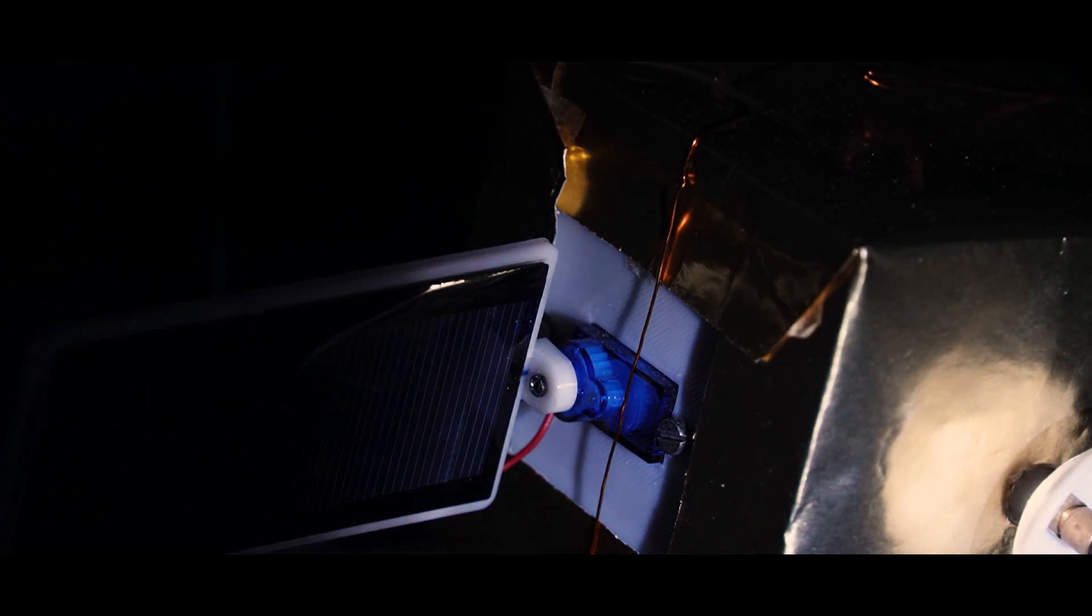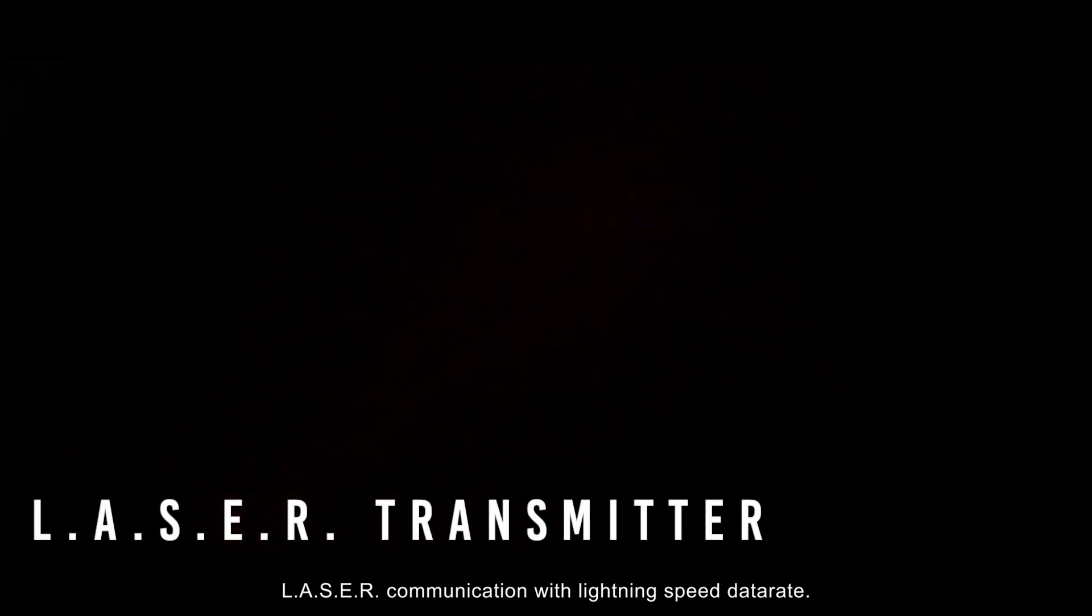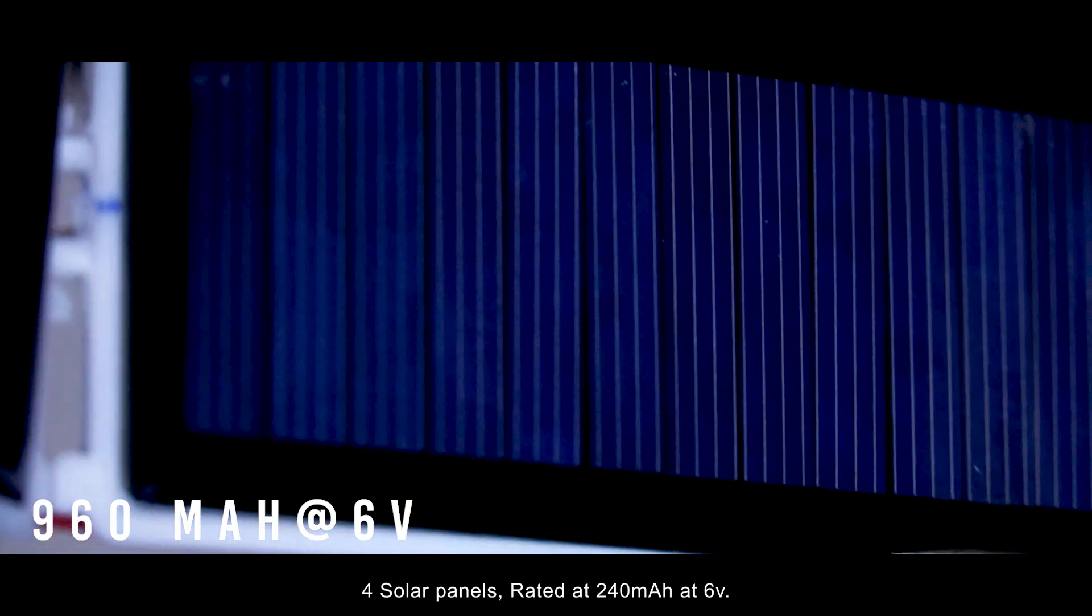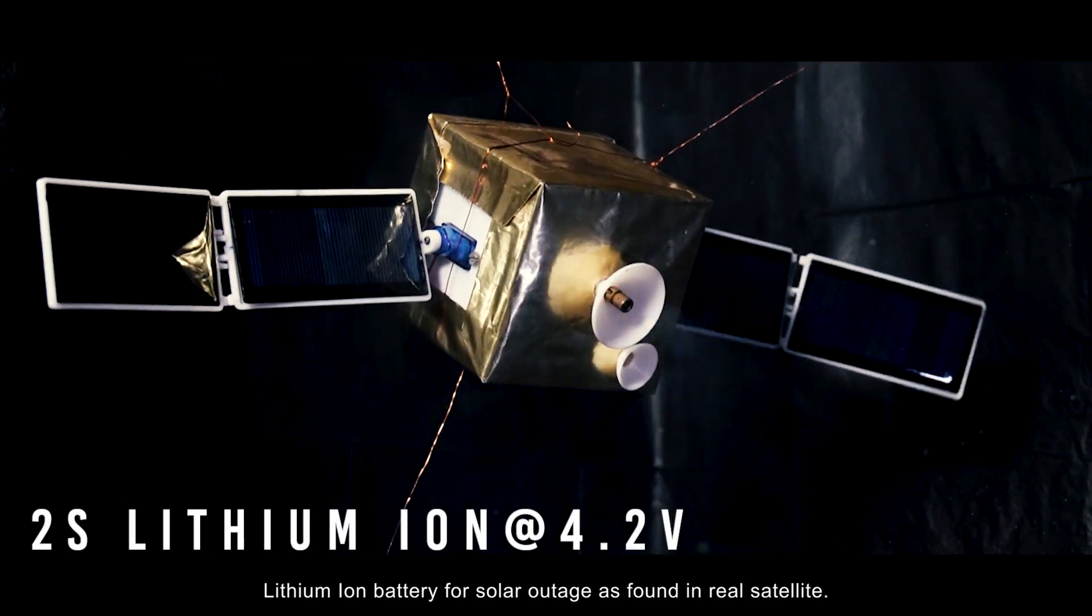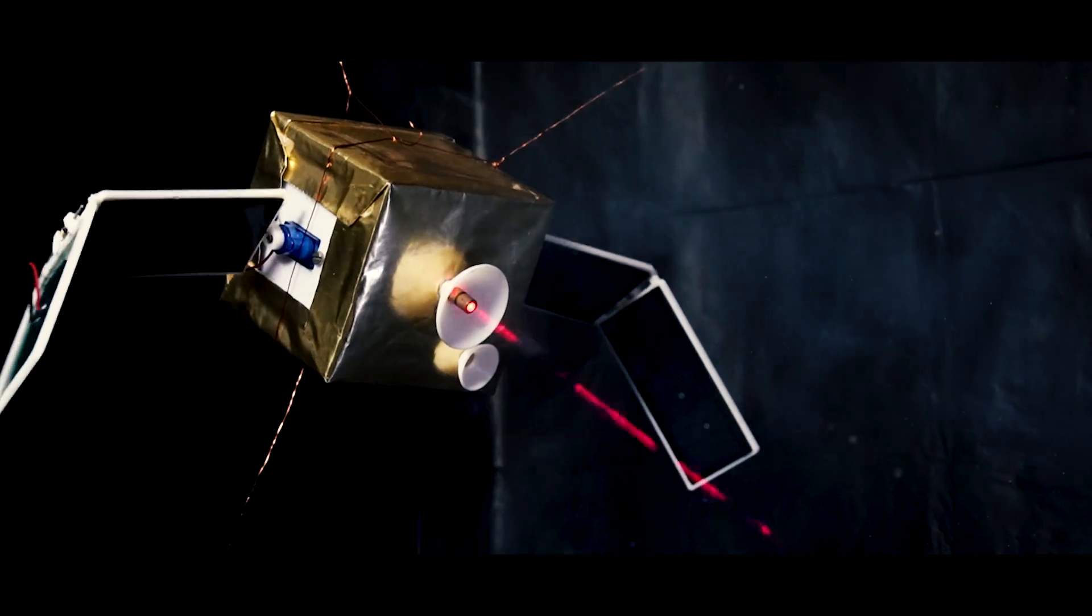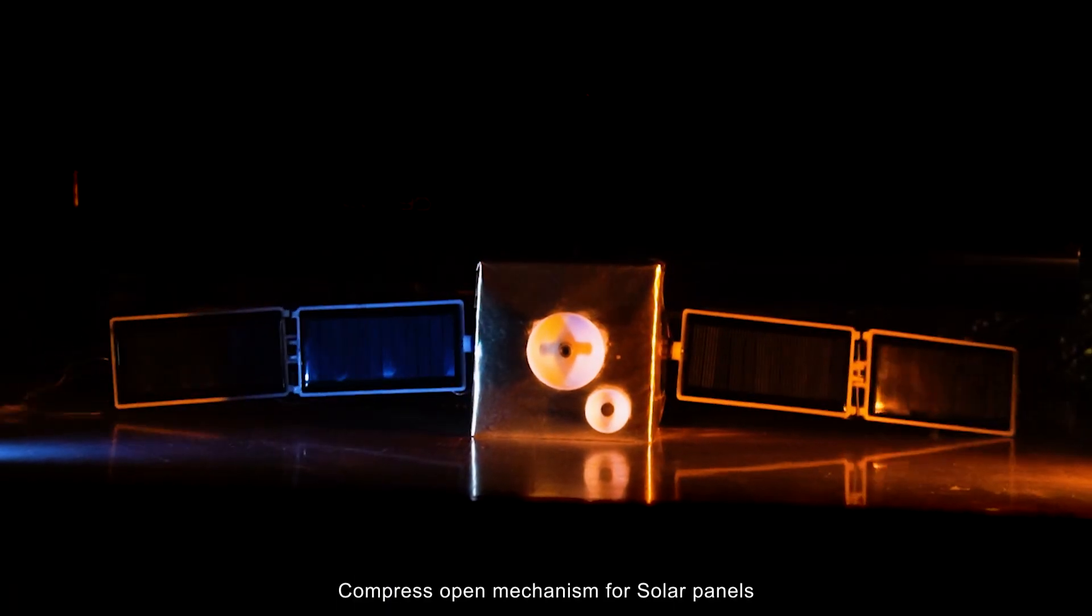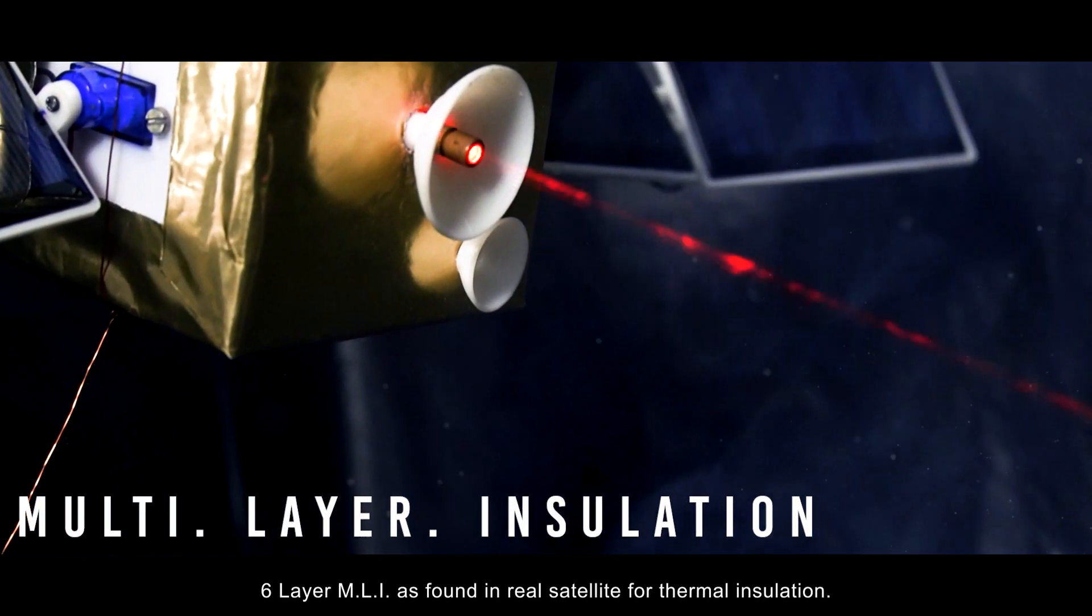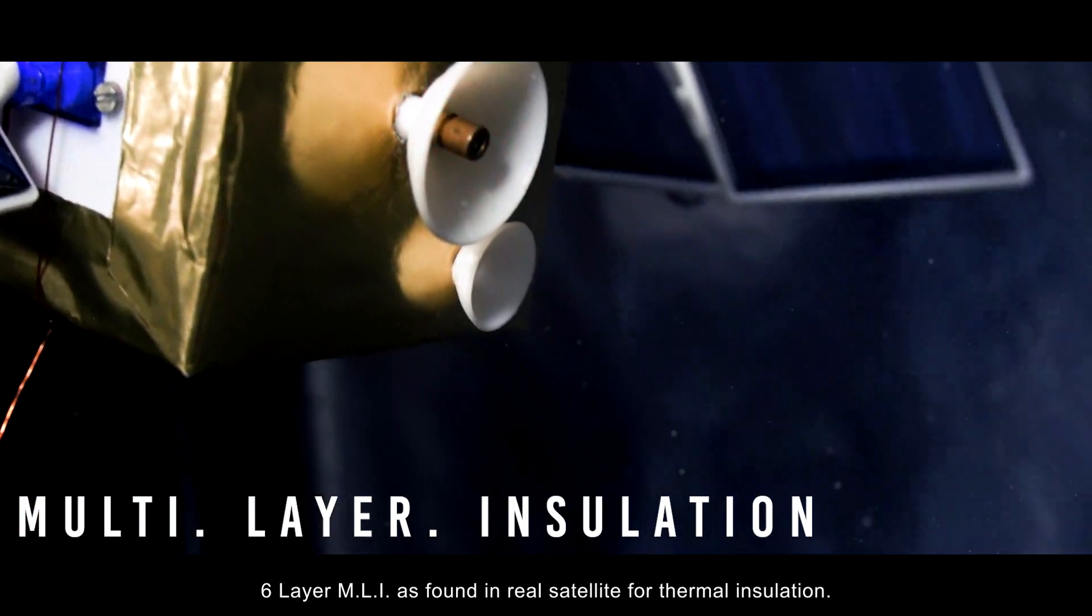Satellite: Laser communication with lightning speed data rate. 4 solar panels rated at 240 mAh at 6 volt. Lithium ion battery for solar outage as found in real satellites. Compress open mechanism for solar panels. 6 layer MLI as found in real satellites for thermal insulation.